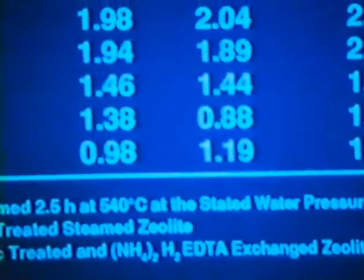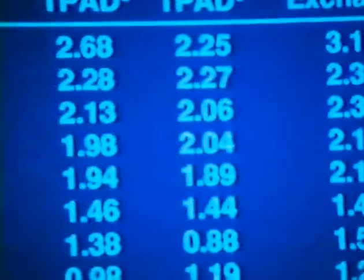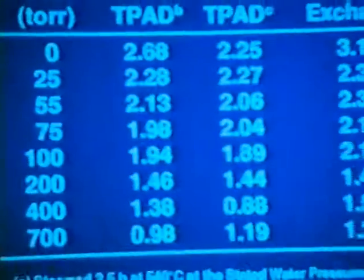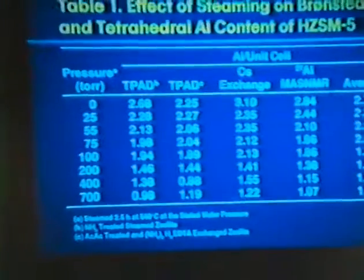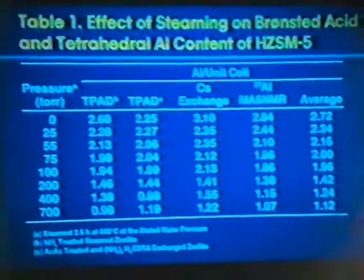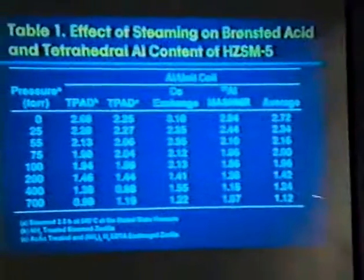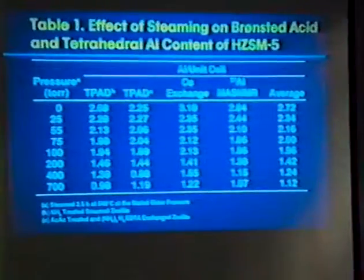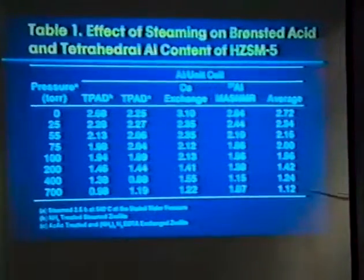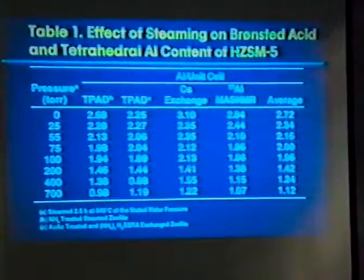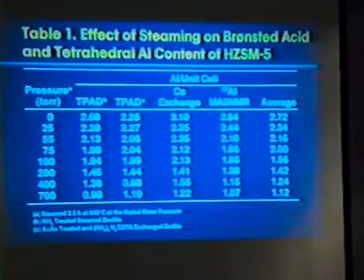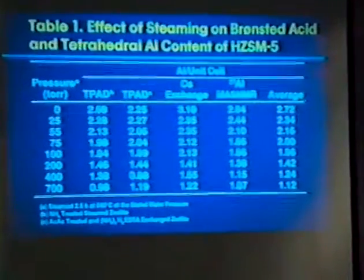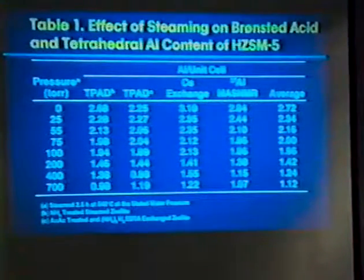Cesium exchange measures the remaining Brønsted sites, aluminum NMR measures the framework, and the numbers by and large are agreeing with each other. We get a gradual decrease in the remaining aluminum to less than one half, under these steam conditions. So we have, of course, hydrolyzed. This is something that we all are aware of.